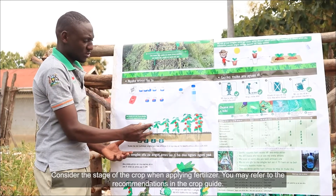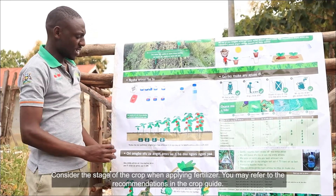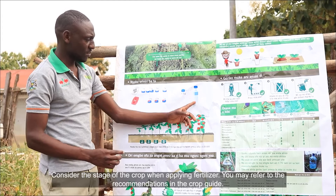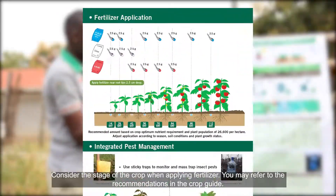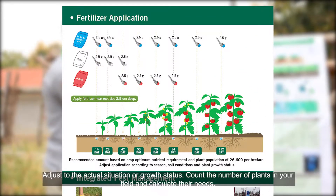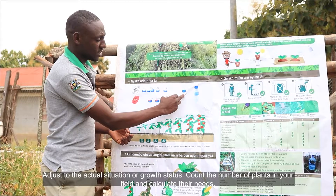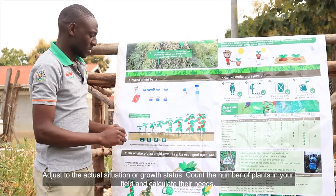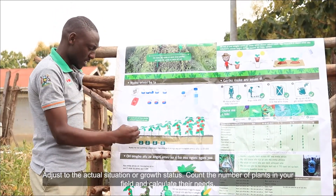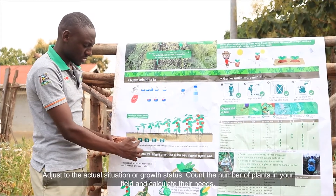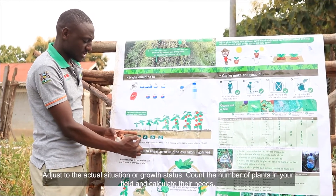Consider the stage of a crop when applying fertilizer. You may refer to the recommendations in the crop guide. Adjust to the actual situation or growth status. Count the number of plants in your field and calculate their needs.